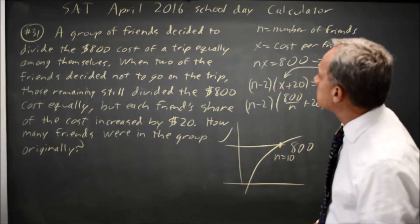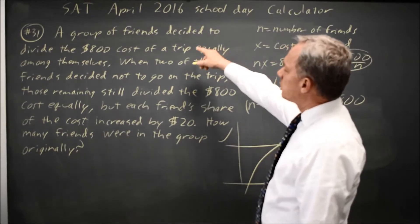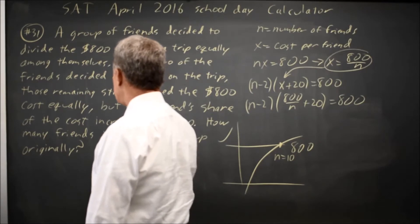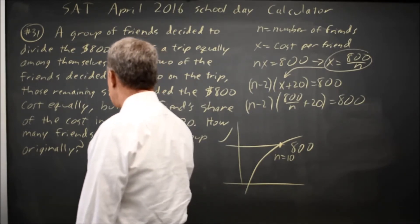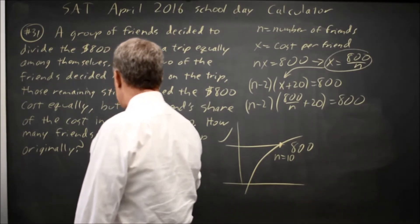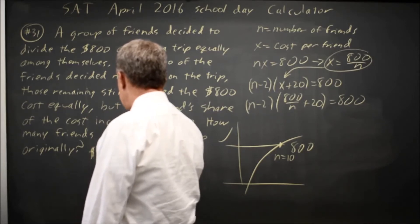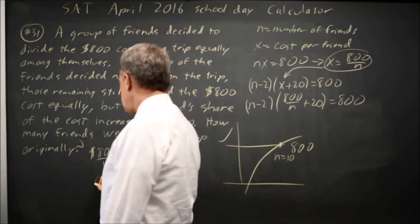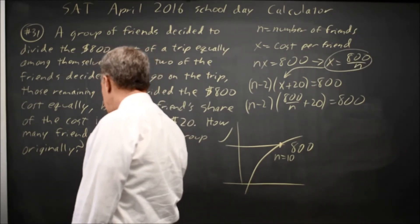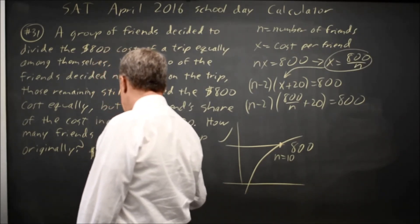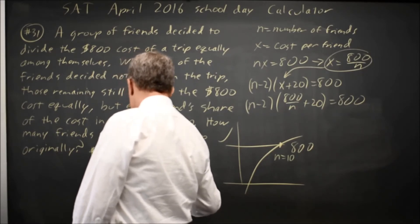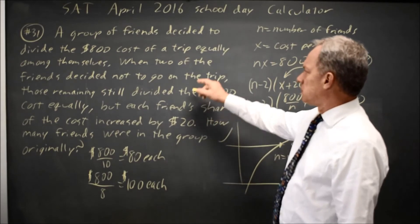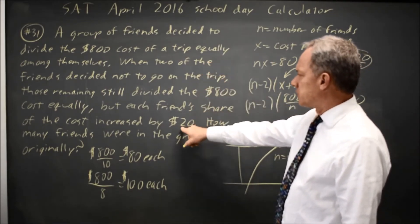Now let's see how that worked out. In fact, 10 friends, we're going to divide the $800 cost equally, so that's 800 over 10 equals $80 each. If two of them drop out, it's $800 divided among eight friends is $100 each, which is, in fact, $20 more per person.